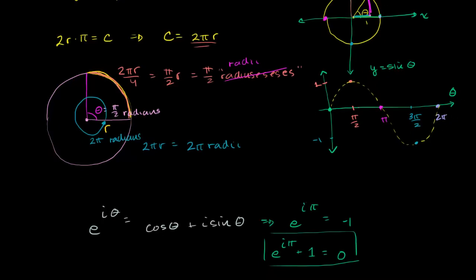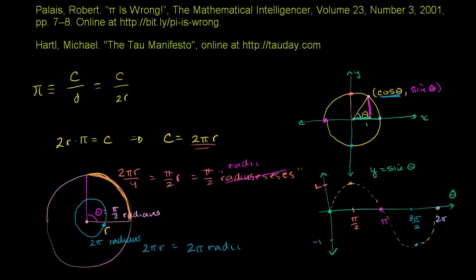I want to make it clear that these ideas are not my own. They're inspired by many people in the tau movement. The first is Robert Palais on 'pi is wrong.' He doesn't argue that pi is calculated wrong — he still agrees it is the ratio of circumference to diameter, which is 3.14159. But he's saying we're paying attention to the wrong number.